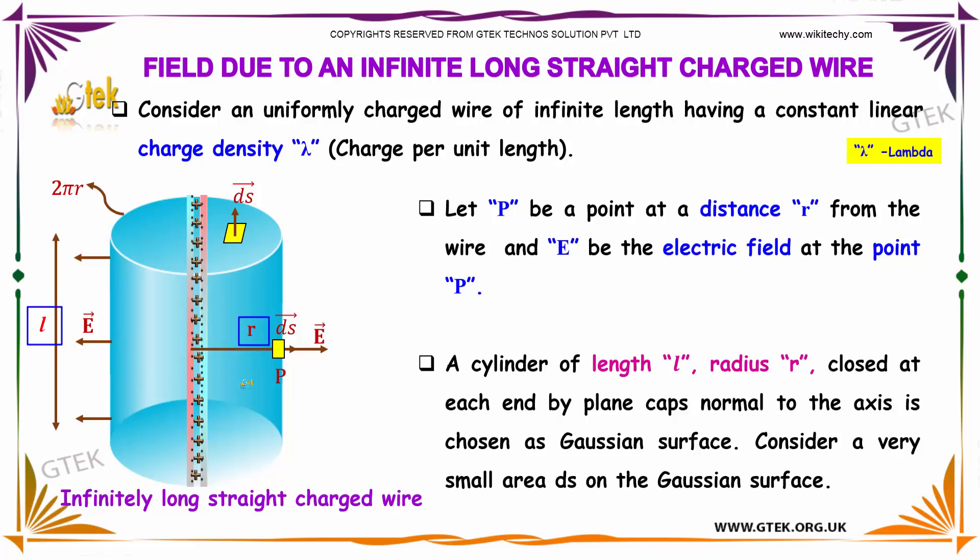A cylinder of length L and radius r, closed at each end by plane caps normal to the axis, is chosen as the Gaussian surface. Consider a very small area ds on the Gaussian surface, which is indicated here.